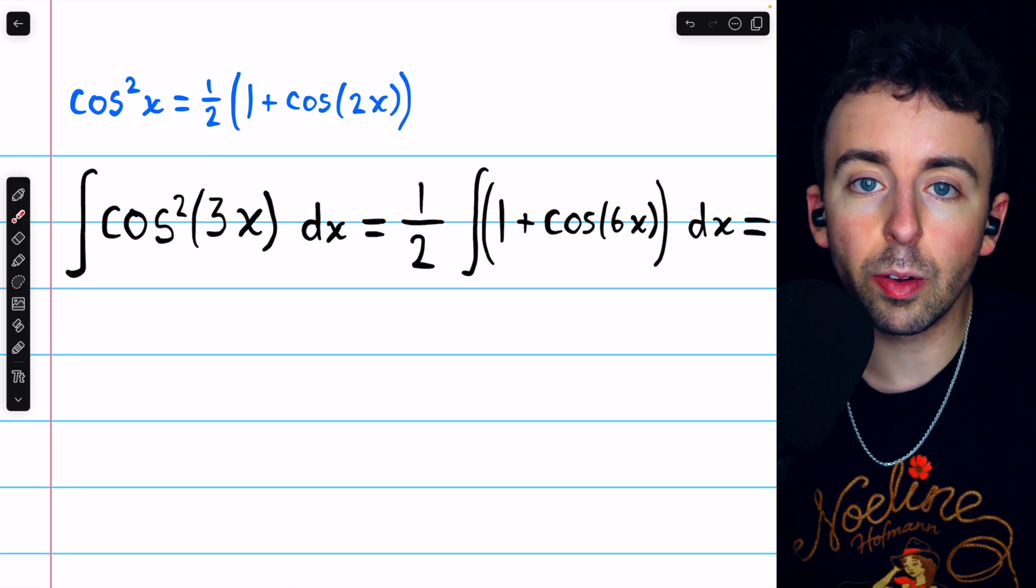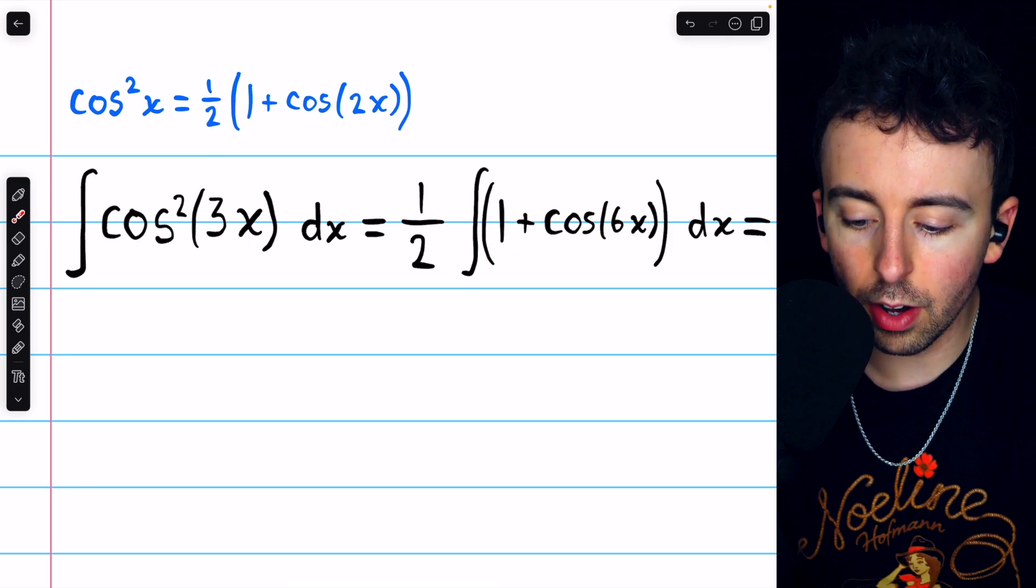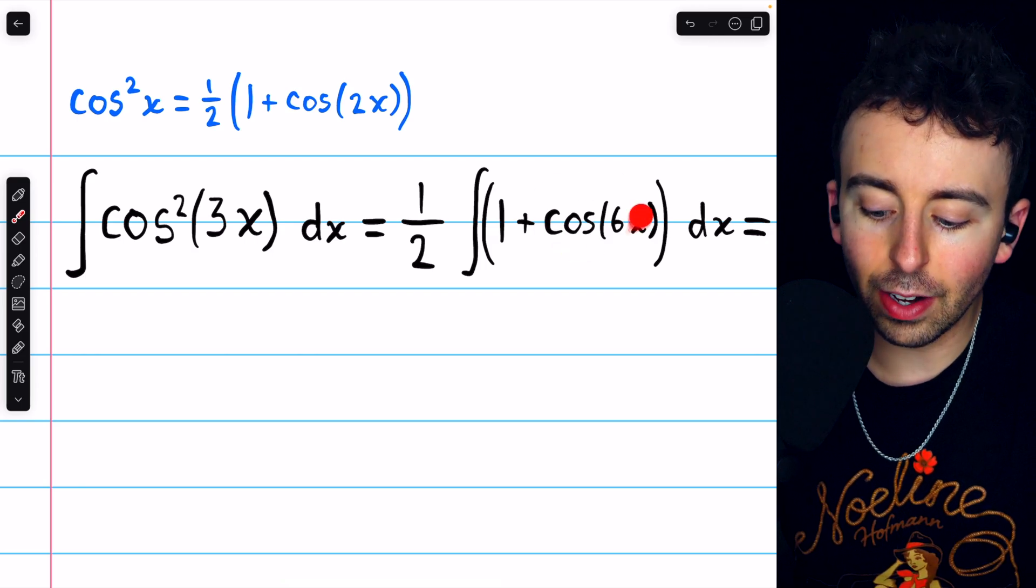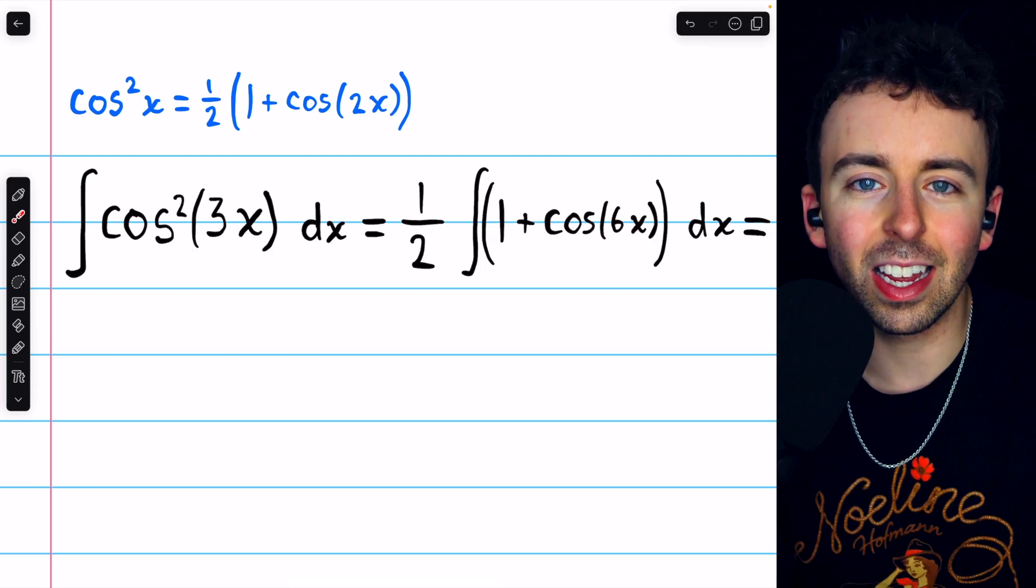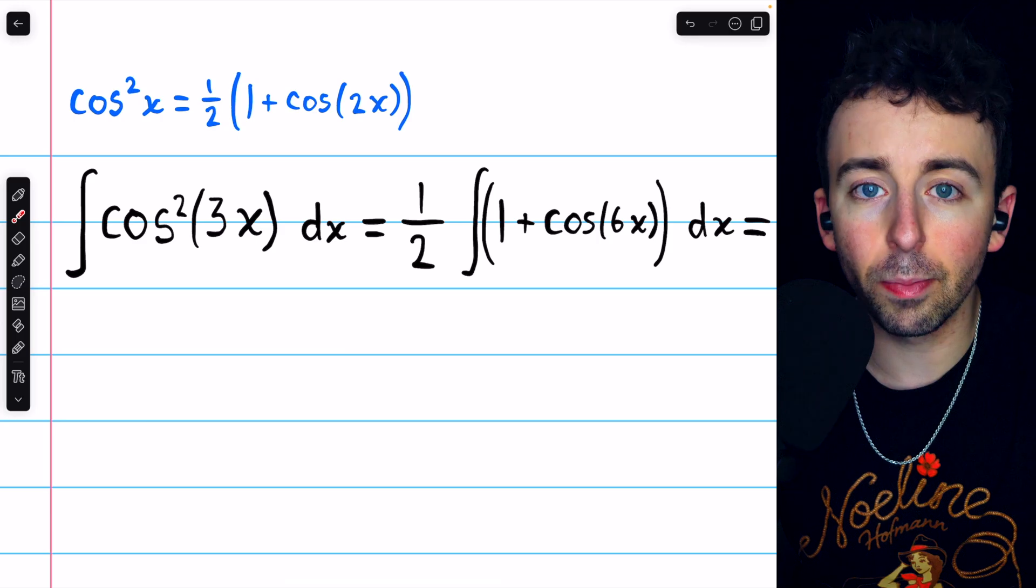At this point, this is straightforward to integrate. 1 will integrate to x, and cosine of 6x, we just have to think about that a little bit, but it's going to be a sine function.